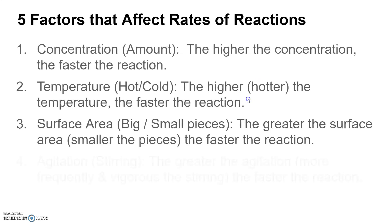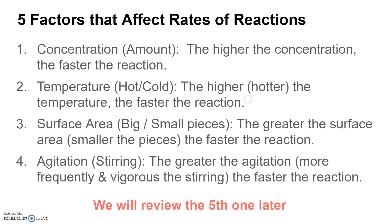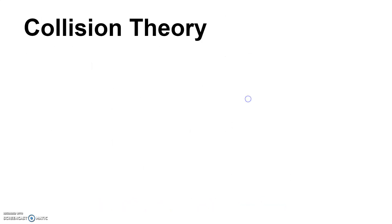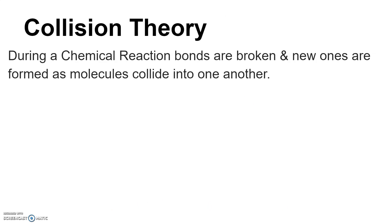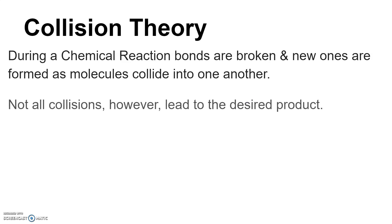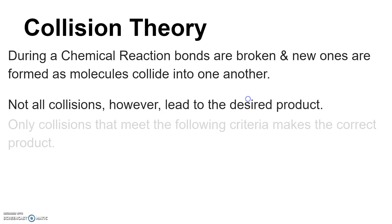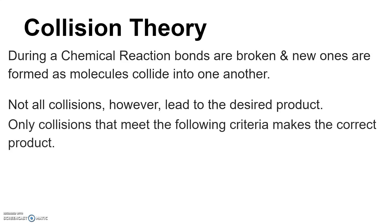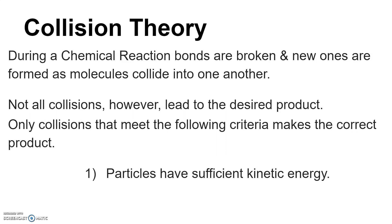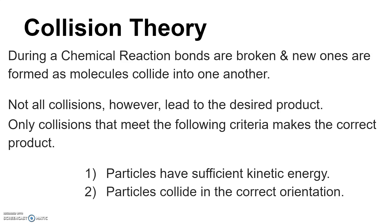Those are four of the five factors. The last factor will be reviewed in a moment. But first, let's explain why those factors work — why do those changes lead to a faster reaction? During a chemical reaction, bonds are broken and new ones are formed. According to collision theory, molecules must collide into one another for that to happen. But not all collisions lead to the desired product — the collisions must meet two criteria.